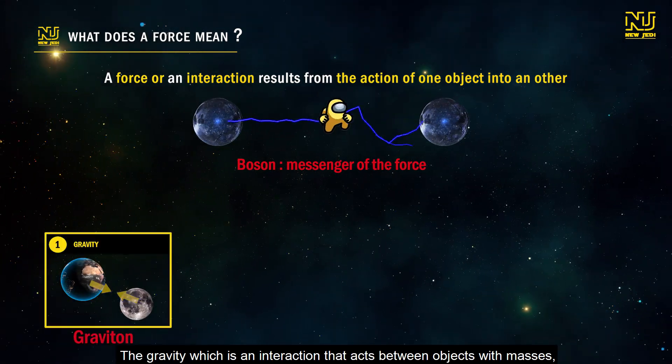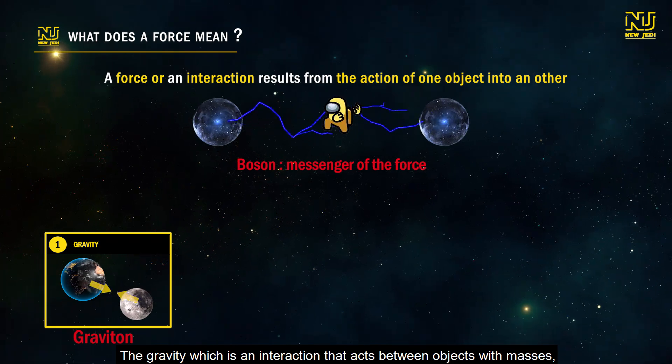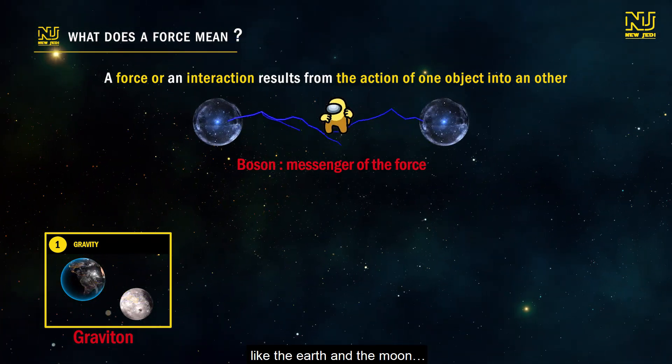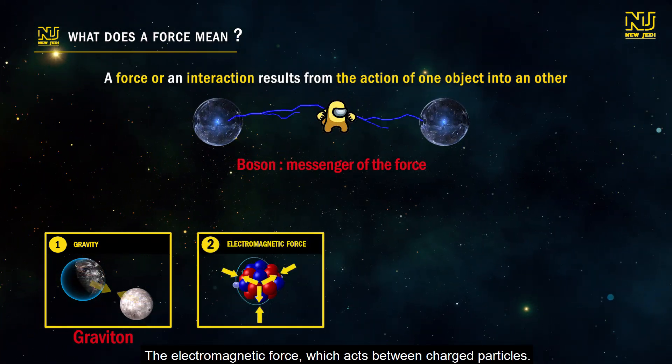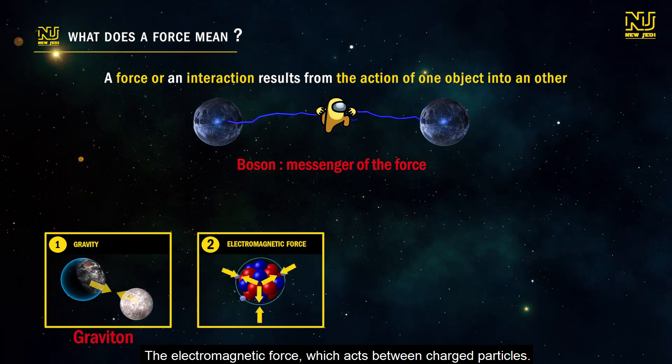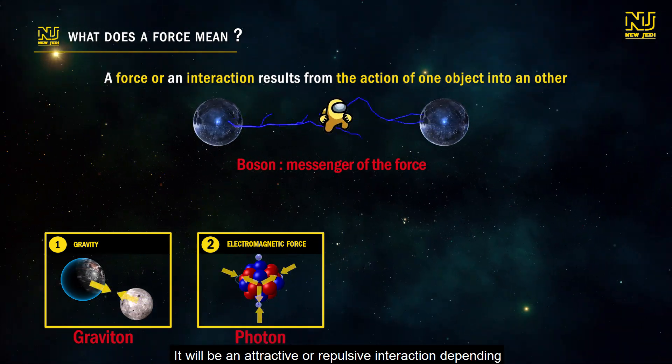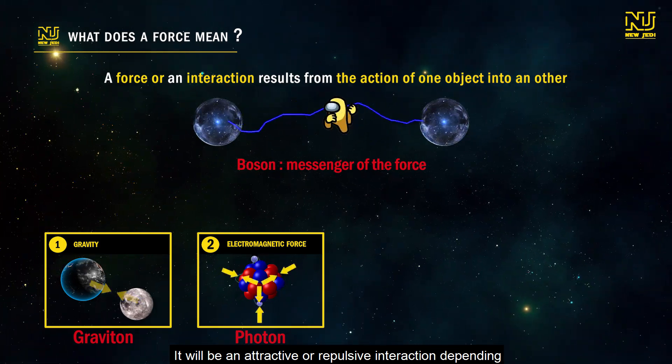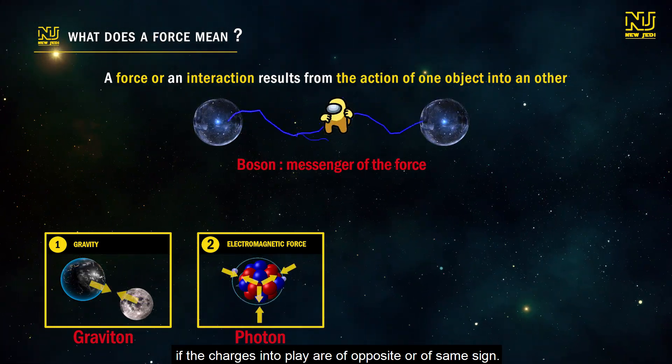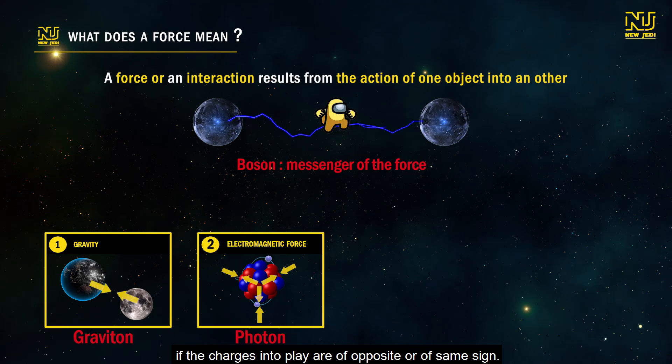Gravity is an interaction that acts between objects with masses, like the Earth and the Moon. The electromagnetic force acts between charged particles. It will be an attractive or repulsive interaction, depending if the charges into play are of opposite or of same sign.